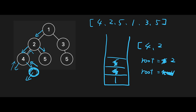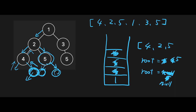Next root is 5. We are at 5 and try to move left, but there's no left child. So we pop a value from the stack — 5 — and add 5 to the result. Now root is 5. We check the right side of 5, but there's no right side, so next root is null. Since root is null, we don't add anything to the stack. Then we pop the top value — 1 — and append 1 to the result. Now root is 1.